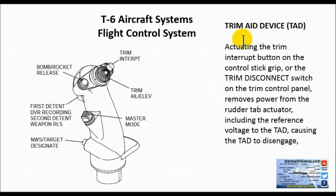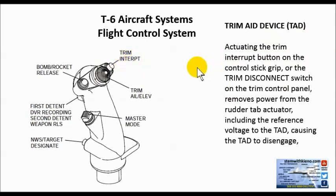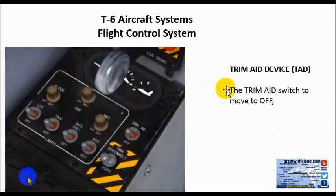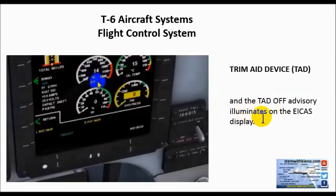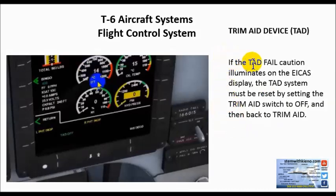Actuating the trim interrupt button on the control stick grip, or the trim disconnect on the panel, removes power from the rudder TAD actuator, including the reference voltage to the TAD, causing the TAD to disengage. Moving the trim aid switch to the off position causes TAD OFF advisory to illuminate on the EICAS display. If the TAD FAIL caution illuminates, the TAD system must be reset by setting the trim aid switch to the off position, and then back to trim aid.